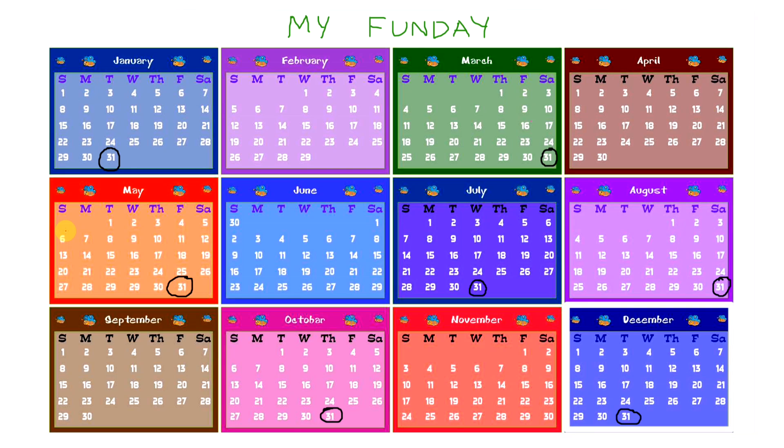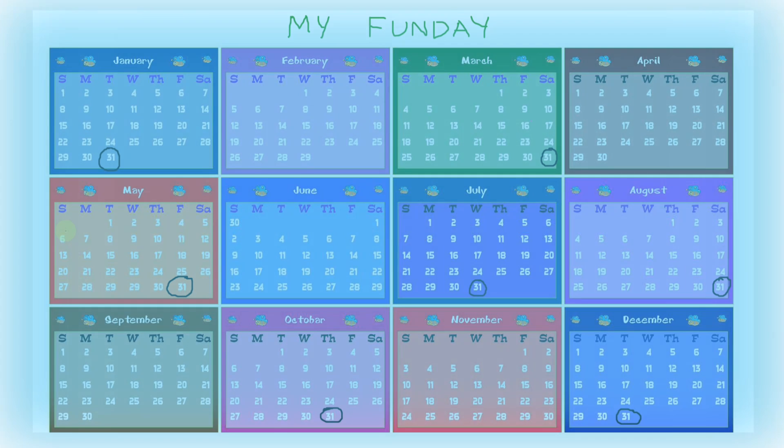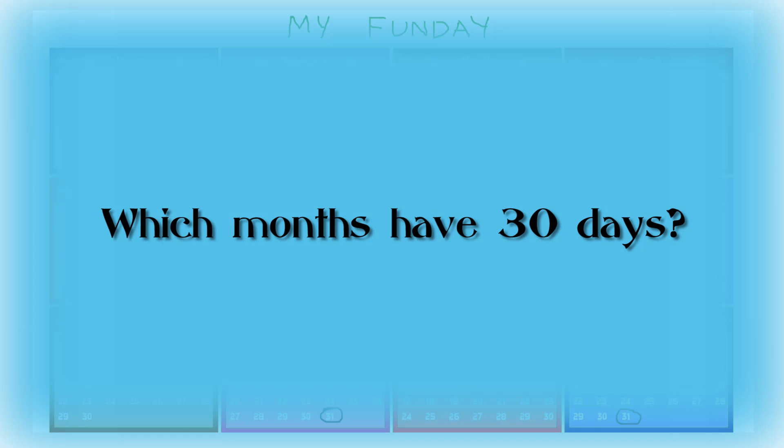September — no. October — yes. November — no. And December — finally, yes. So we see there's January, March, May, July, August, October, and December — they all have 31 days in a month.